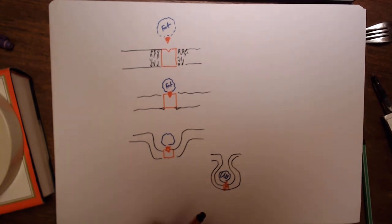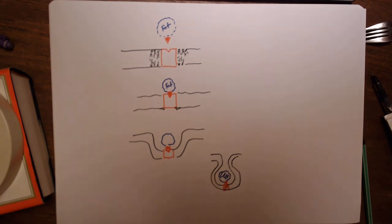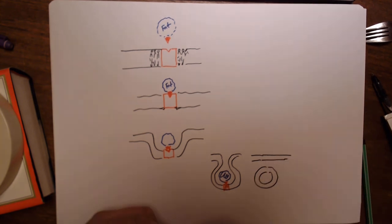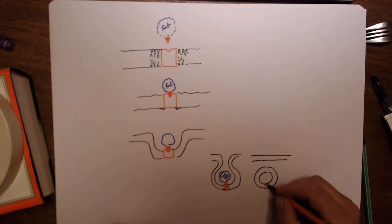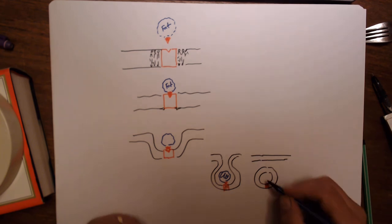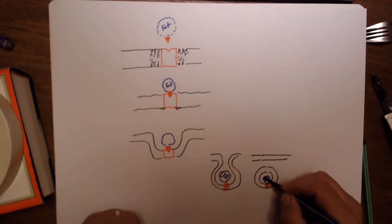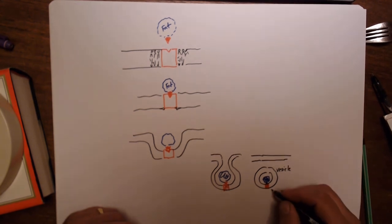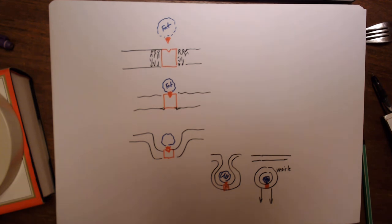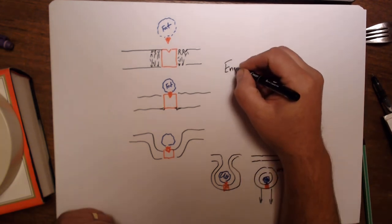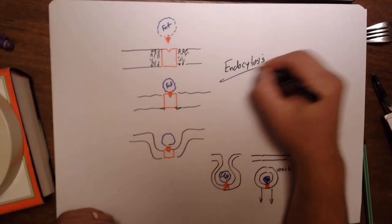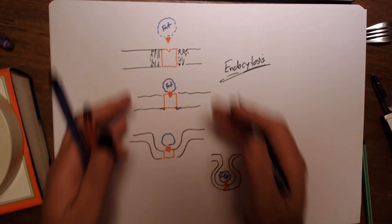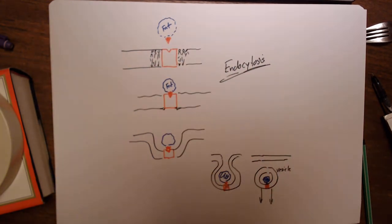Eventually the membrane ties off and you get a vesicle, which can now move freely into the cell, bringing the fat with it. This is called endocytosis — which literally means bringing into the cell. Endo means into, cytos means cell. This can happen when you have receptors on the outside surface.